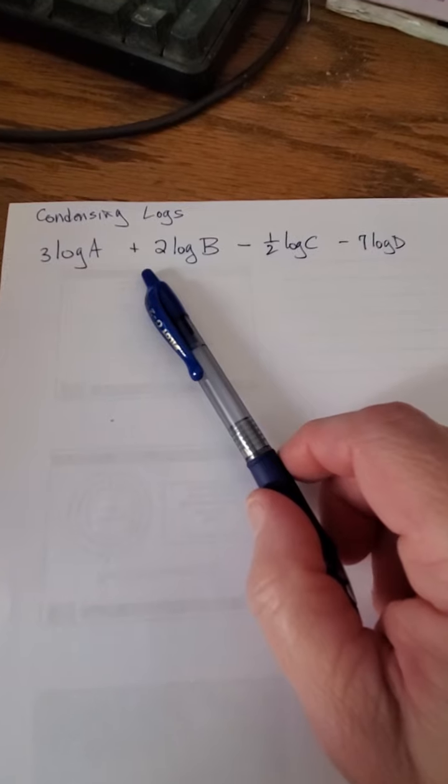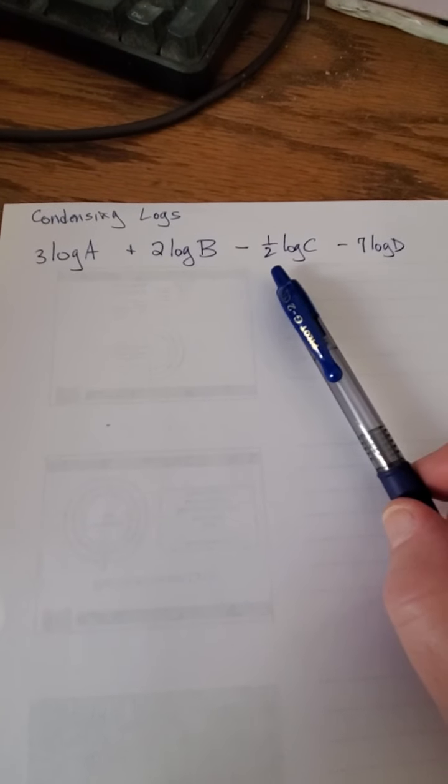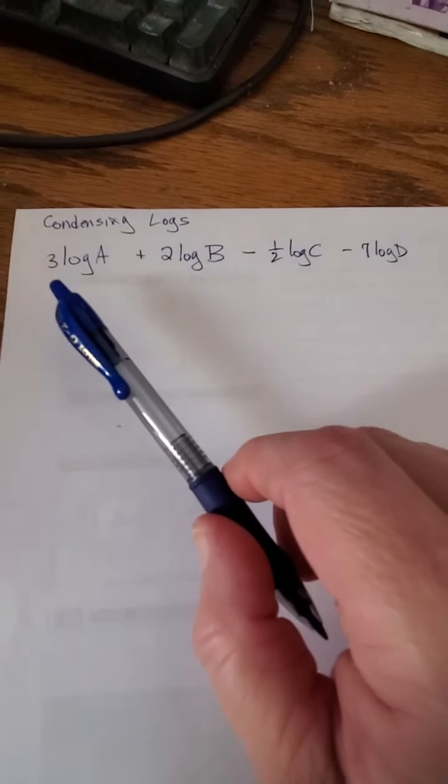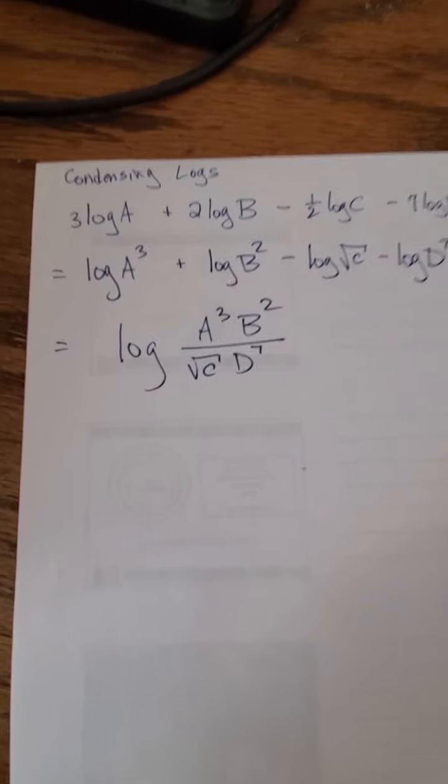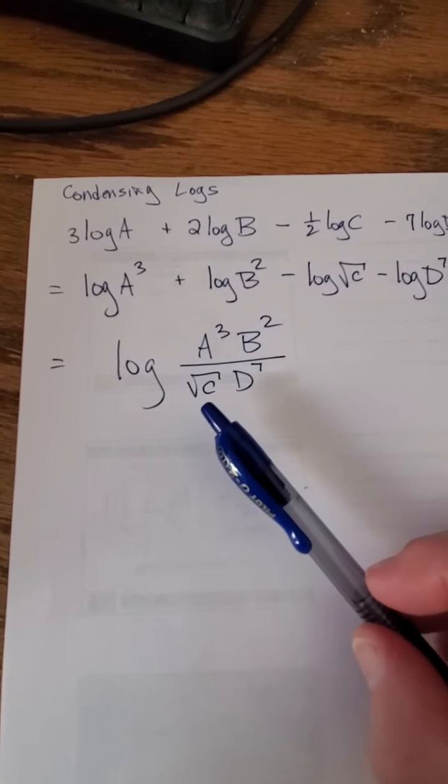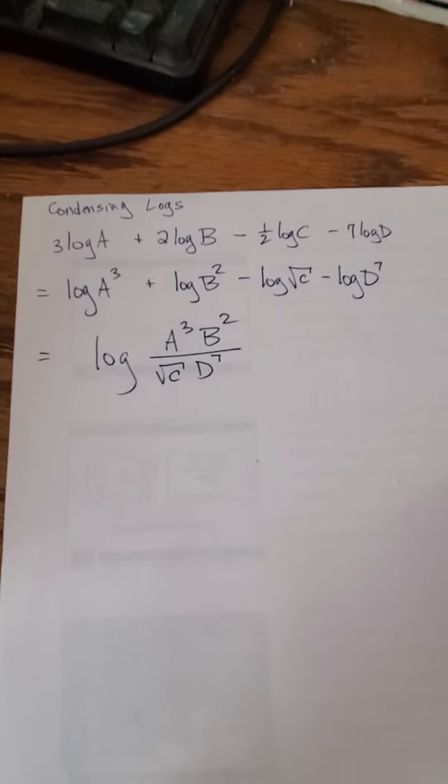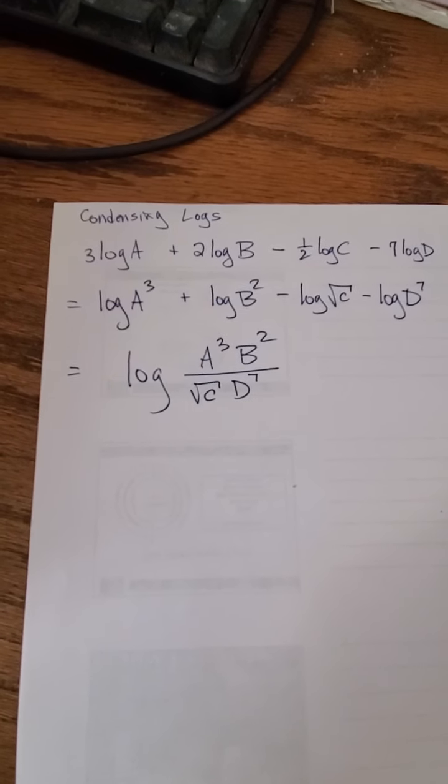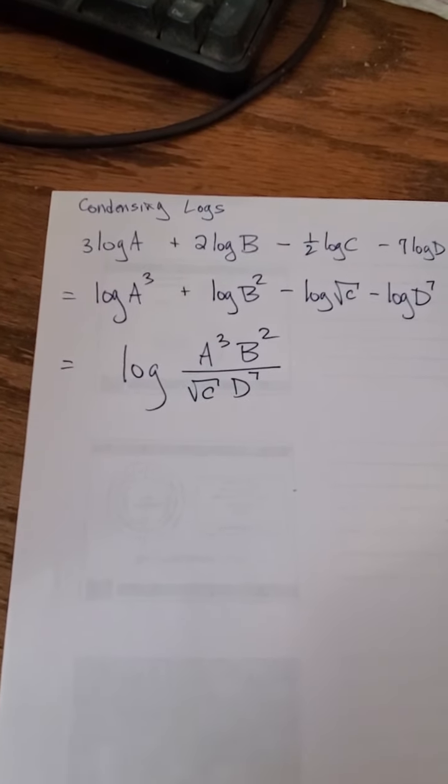So the things which are added get multiplied. The things which are subtracted get divided, but first I have to deal with the coefficients and turn them all into exponents. Now I just have to multiply the adding things and divide the subtracting things, and we get our final answer, and that is the log of a cubed b squared over square root of c d to the seventh. The next thing we're going to do is expand logs.